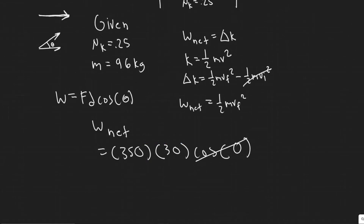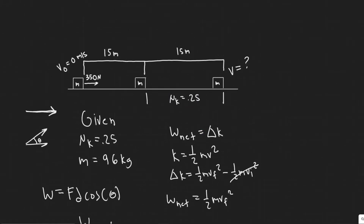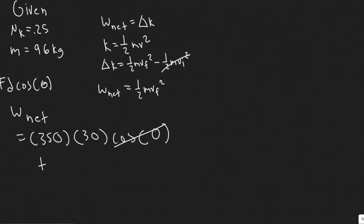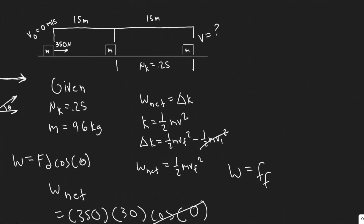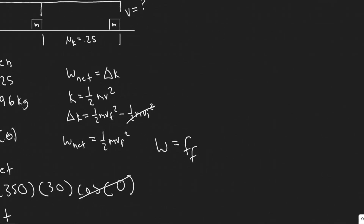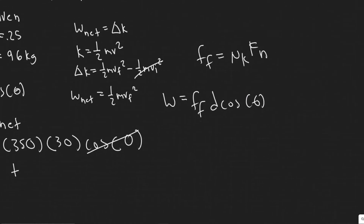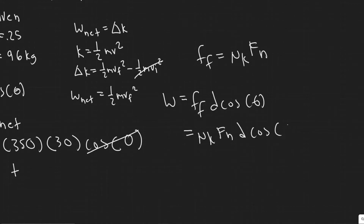We also have to add the work done by the friction force. Once again it's F times d times cosine of theta, where F is the force of friction. The formula for friction is the coefficient of kinetic friction, mu sub k, times the normal force F-sub-n. So this becomes mu-k times F-sub-n times d times cosine of theta.